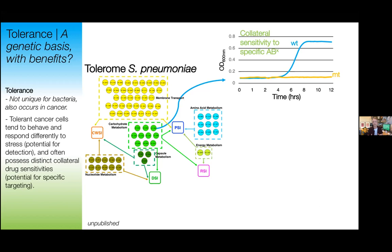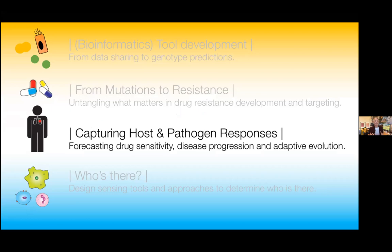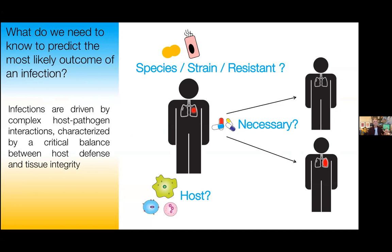Infections are not just influenced by drugs. The host has a super important role to play. Infections are driven by complex host-pathogen interactions, characterized by a critical balance between host defense, tissue integrity, and pathogen control. If this balance is not properly maintained, the infection may escape control and require treatment. Determining when, whether, and how to interfere are not straightforward questions. In infectious diseases, novel diagnostics are mostly focused on pathogen identification, which is really important. However, with the emergence of new experimental and computational tools, opportunities are arising to achieve a much deeper and integrated understanding of how pathogens interact with drugs, their environment, and the host.